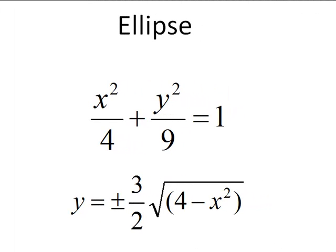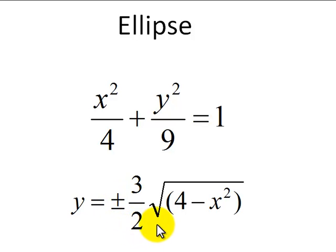Now we'll graph the ellipse, which is another conic section. The equation we'll use is x squared over 4 plus y squared over 9 equals 1. The center of this ellipse will be at the origin. Since it's not a function, we'll find the equation for the upper half and the lower half. The equation gives plus or minus 3 halves times the square root of 4 minus x squared. The upper half is positive 3 halves times the square root of 4 minus x squared, and the lower half is negative 3 halves times the square root of 4 minus x squared.